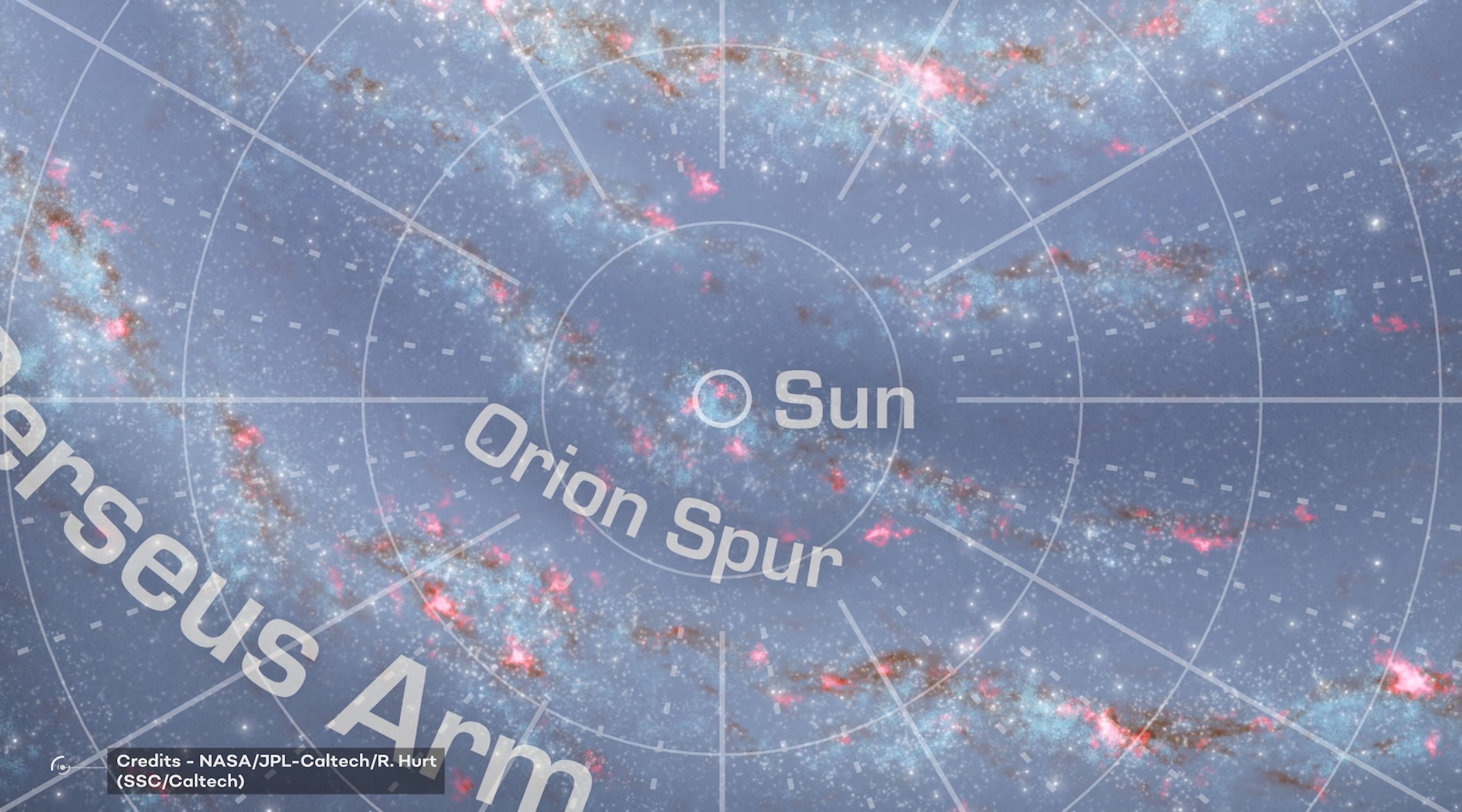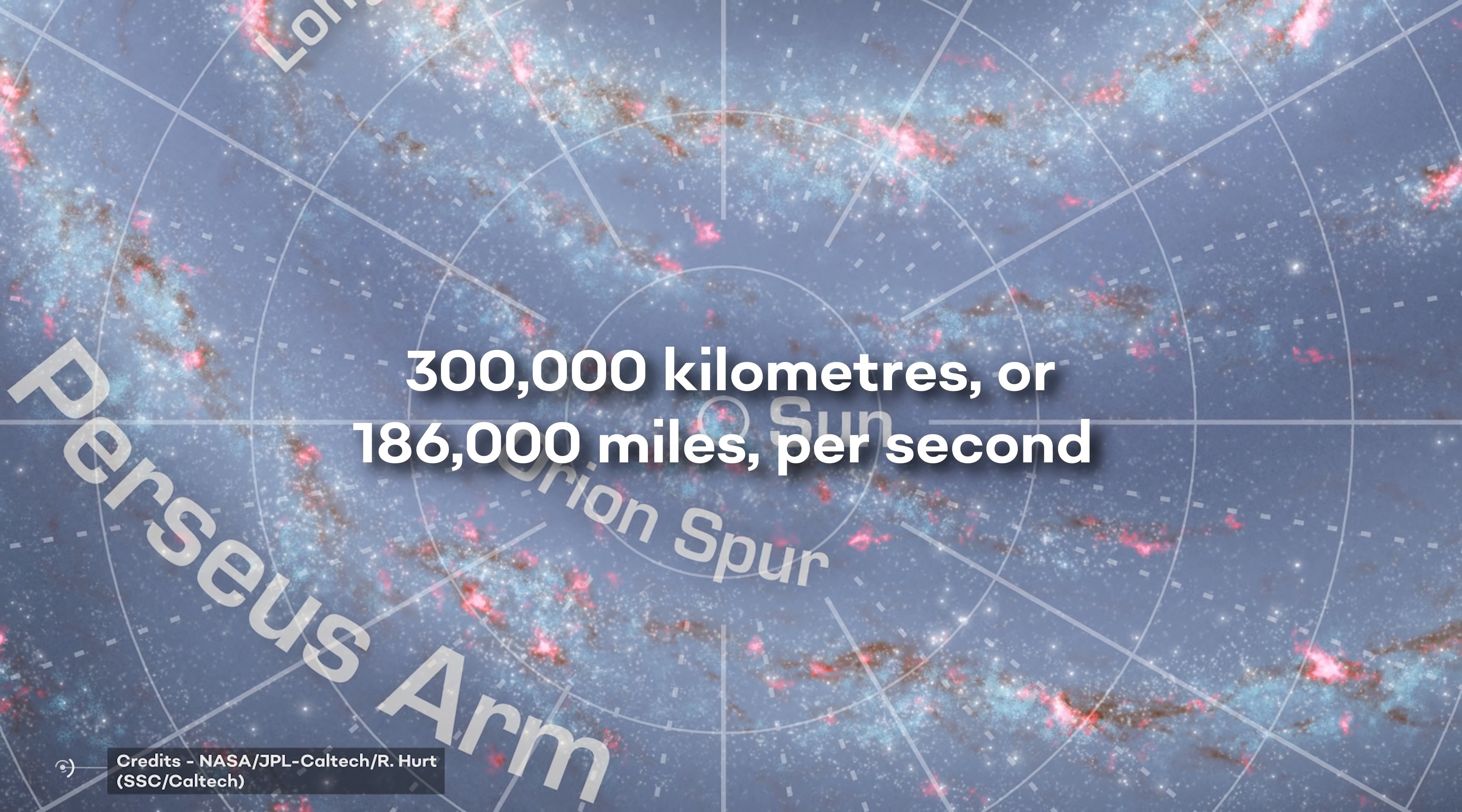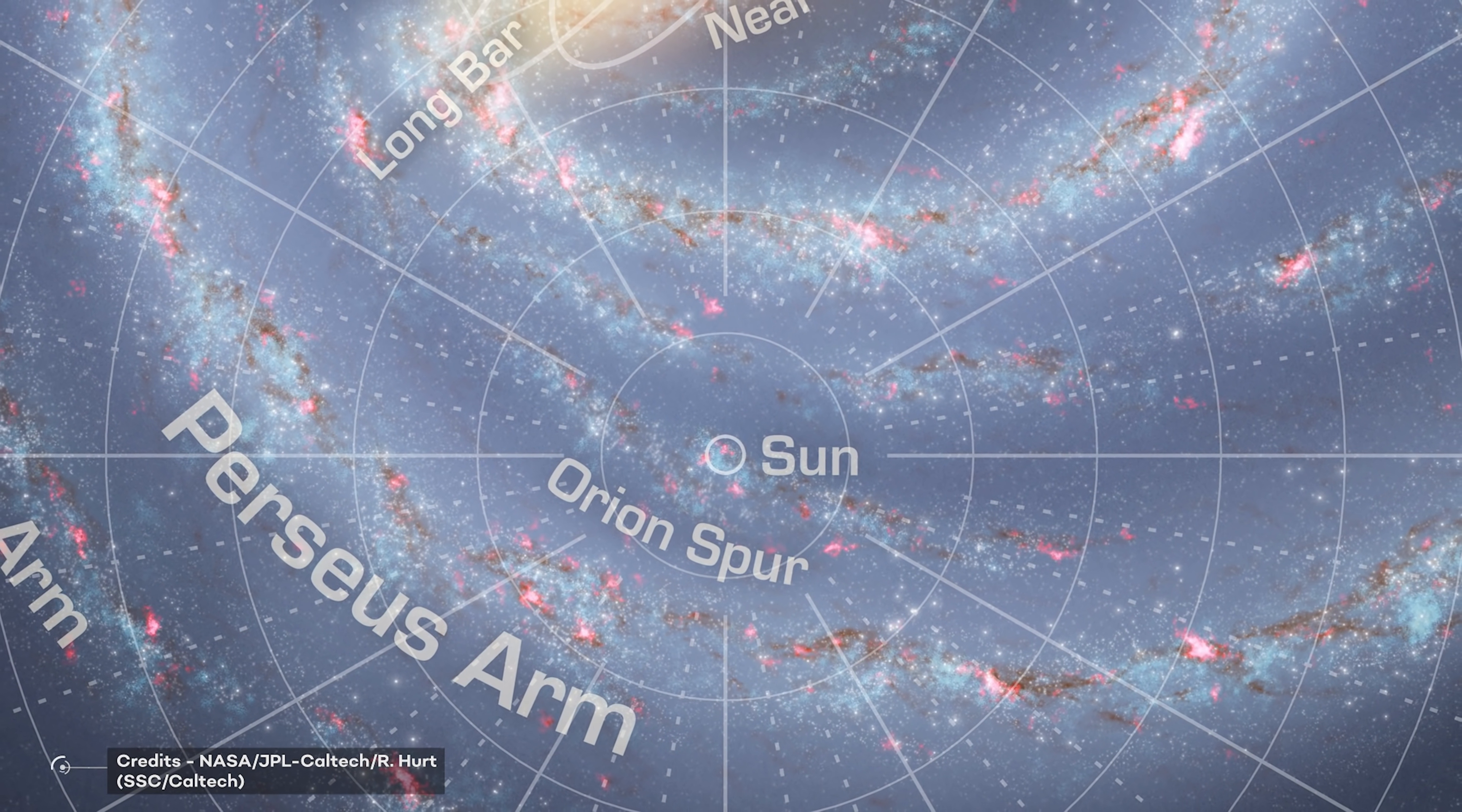Even if you could travel at the speed of light, 300,000 kilometers or 186 miles per second, it would take you about 25,000 years to reach the middle of the Milky Way.